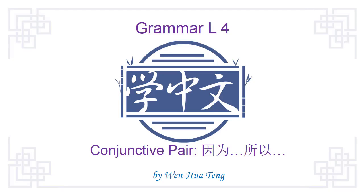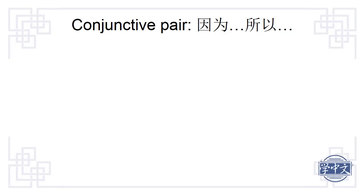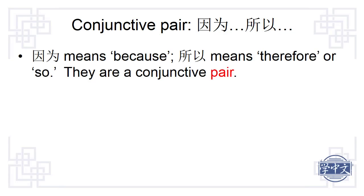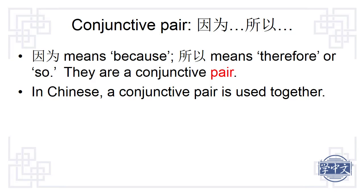This presentation is about the use of the conjunctive pair yinwei (因为) and suoyi (所以) in Chinese. Yinwei means 'because' and suoyi means 'therefore' or 'so' — they are a conjunctive pair. In Chinese, a conjunctive pair is used together.